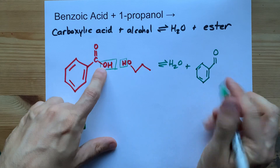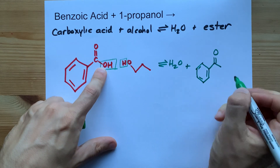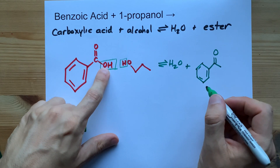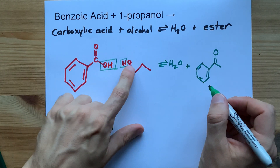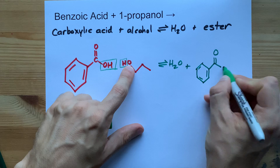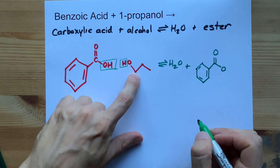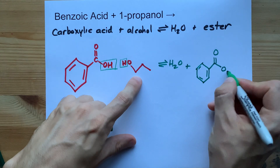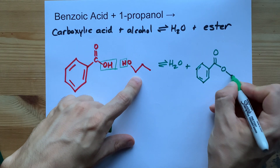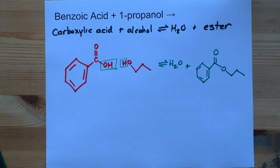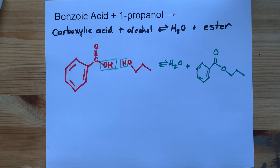I just copied it out. Now instead of that O I have that O, and then I just continue my chain as normal — one, two, three extra carbons. That's the product — that is my ester here.